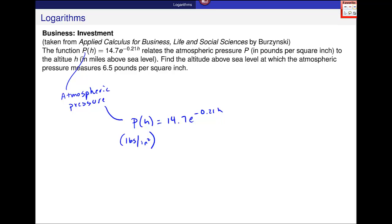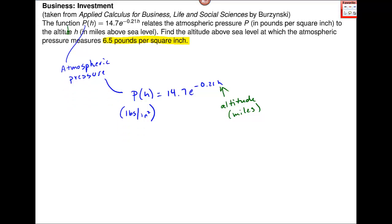And then to the altitude - I think there's supposed to be a d in there. Altitude h, altitude in miles above sea level. Find the altitude above sea level at which the atmospheric pressure measures 6.5 pounds per square inch. This is a problem where even if you're not sure exactly what to do, the units here of measurement can help you.